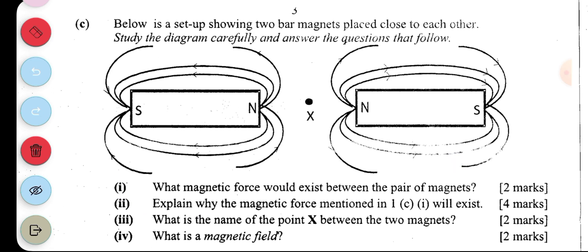We have our next question here. Below is a setup showing two bar magnets placed close to each other. State the diagram carefully and answer the questions that follow. So we have two bar magnets here, this and then that. We have the south and the north, north and the south. So we have north facing north.